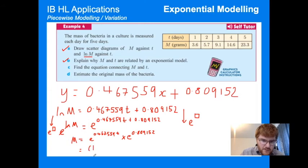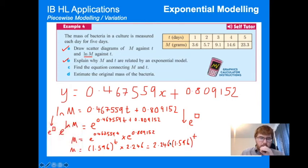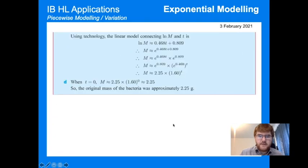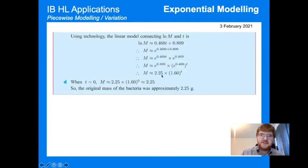So we're going to pop those values in. We are going to get 1.596 to the power of t times 2.246. If I was to write this in the most neatest form possible, this would be 2.246 open brackets 1.596 to the power of t. So that's our model, rounded to three significant figures.